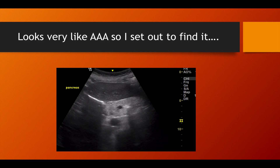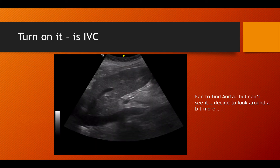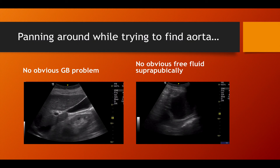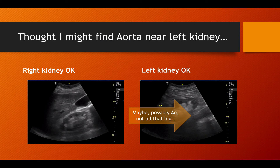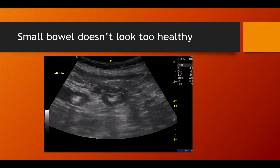The first view through the pancreas made me wonder if that was the abdominal aorta. I turned laterally and discovered — nope — that was the IVC. I looked further: the gallbladder seemed fairly normal, no fluid behind the bladder on the suprapubic view, the right kidney seemed alright, and the left kidney seemed okay too, although fairly sparse on the cortex. I wondered if the abdominal aorta was just inferior to that left kidney, but by this time I was getting worried because I hadn't actually seen a definite aorta. I looked in the left abdomen and found hypoperfused small bowel but still couldn't find the abdominal aorta.